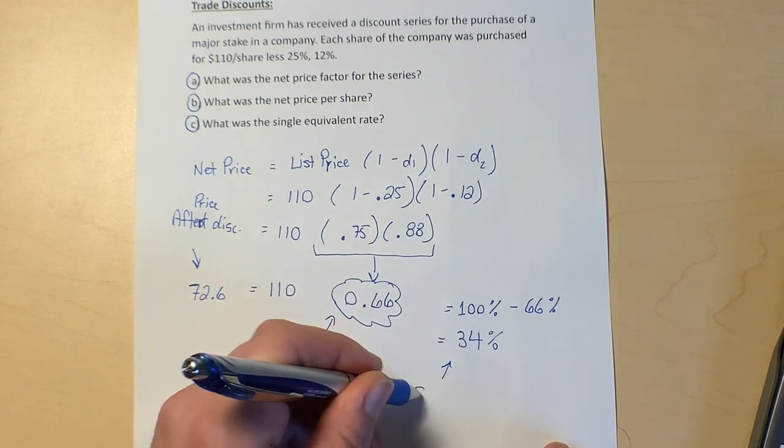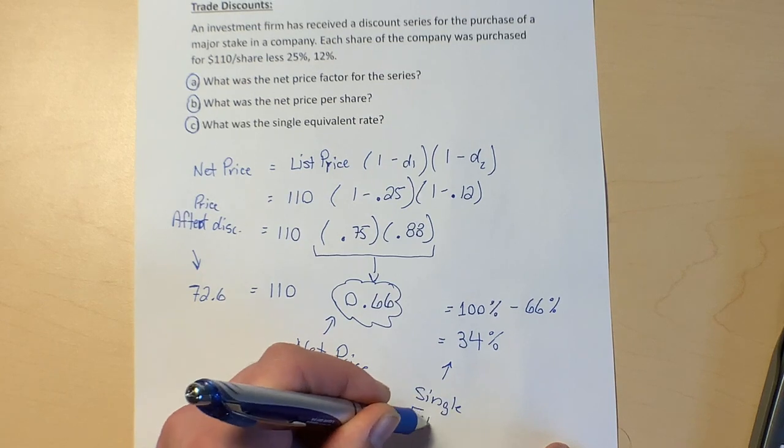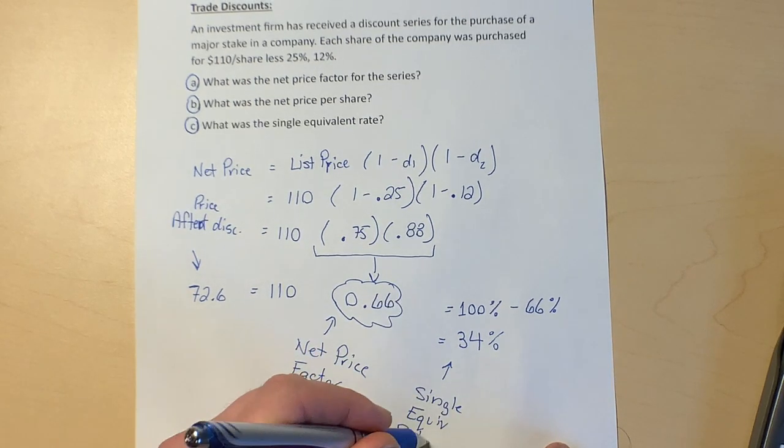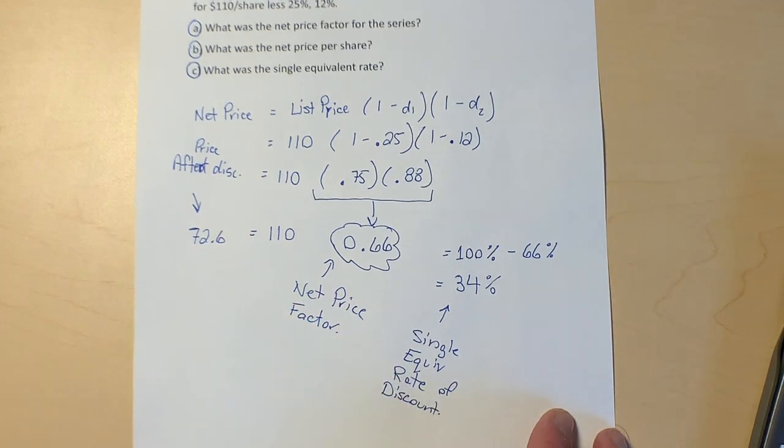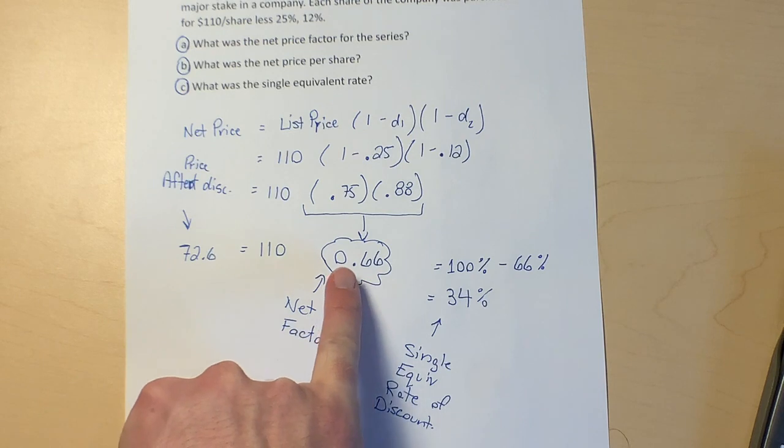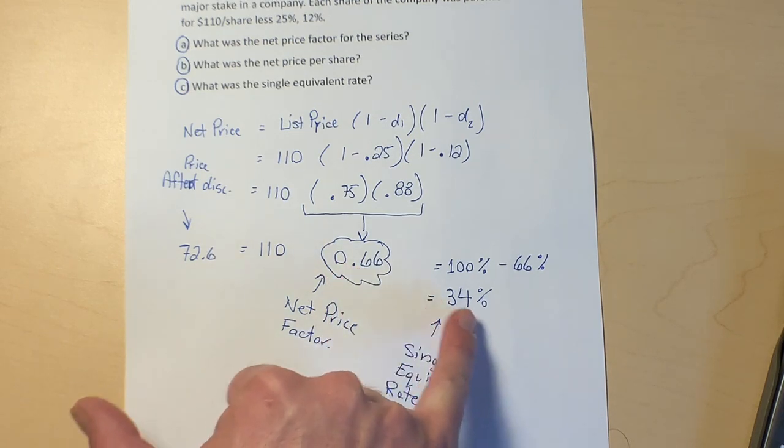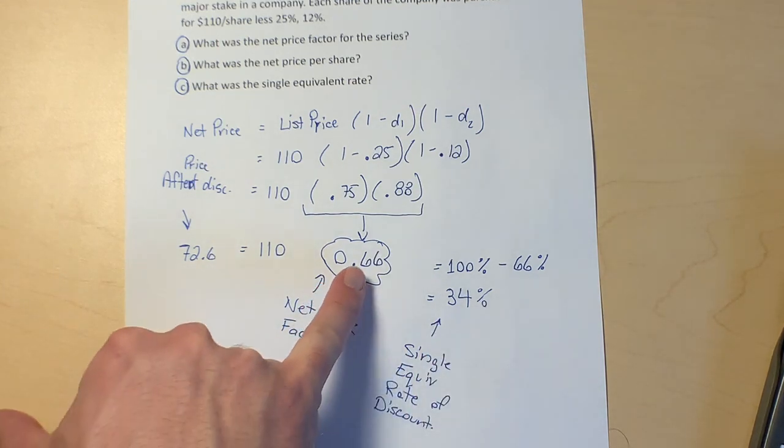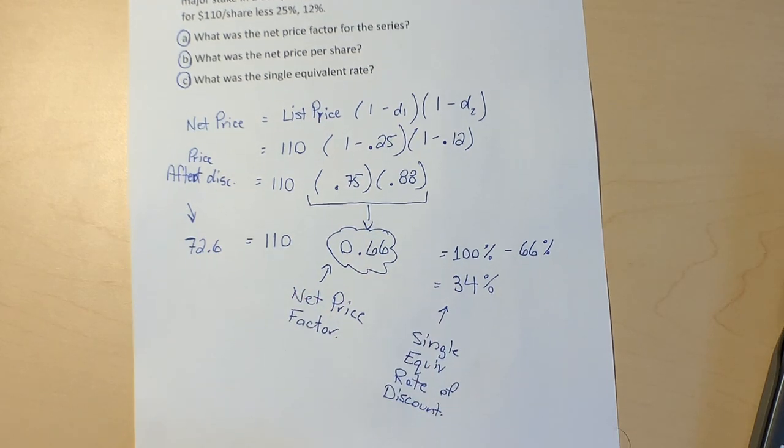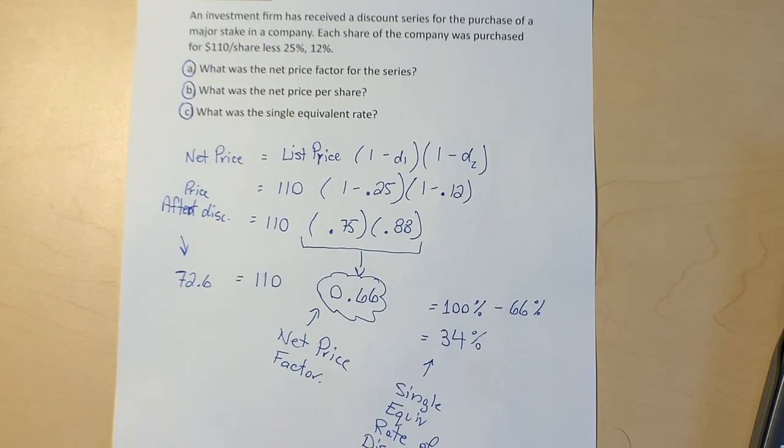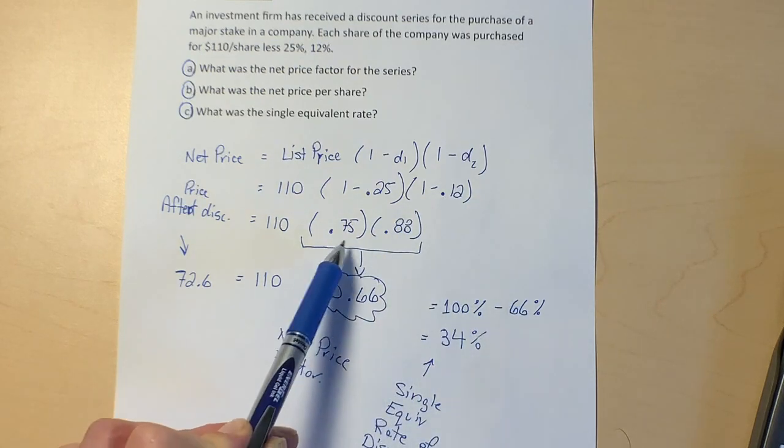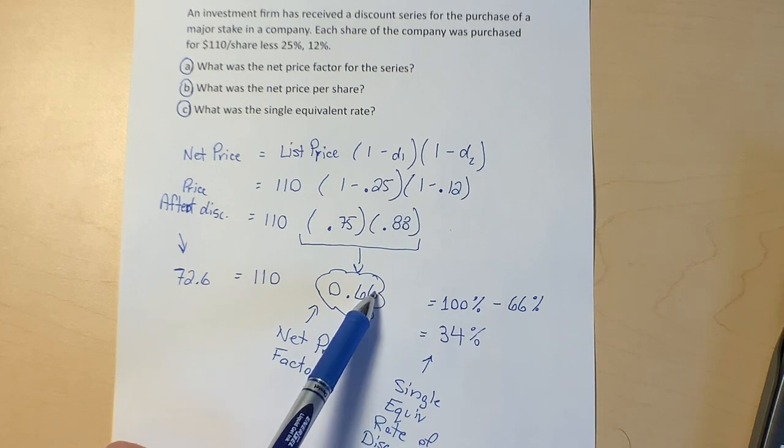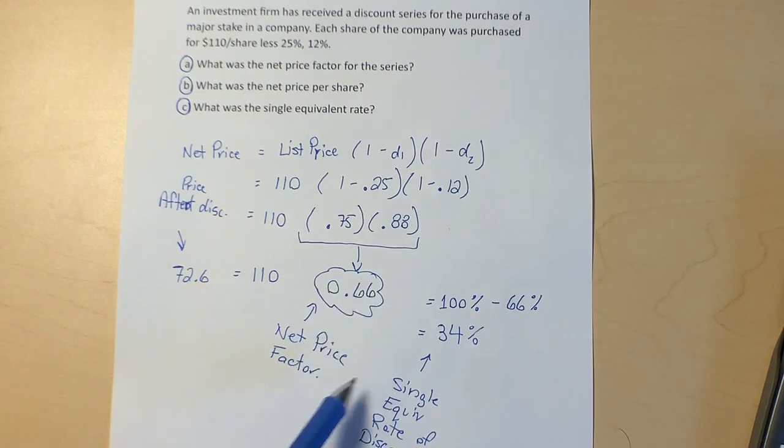So this would be the single equivalent rate—the single equivalent rate of discount. And they're kind of opposites, right? Together, this and this will always add up to 100%. And if you had more discounts—let's say you had three discounts here—we would just make this a little bit longer and add the third discount. We would multiply the three things together to get our single net price factor here, and we would do some subtraction to figure out our single equivalent rate of discount there. Happy mathing, everybody!